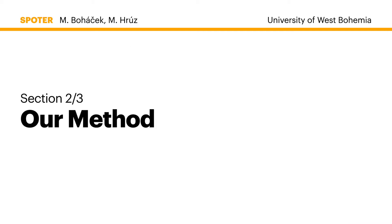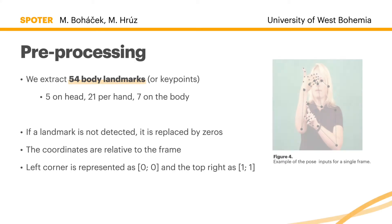Let's now move on to our method in detail. In our pipeline we start with pre-processing. First, we extract 54 body landmarks or keypoints for each frame in the sign video. There are five landmarks on the head, seven on the body, and then 21 additional landmarks for each hand. If a landmark is not detected, we replace the coordinates with zeros. You can see the same example as on the previous slides in figure four.